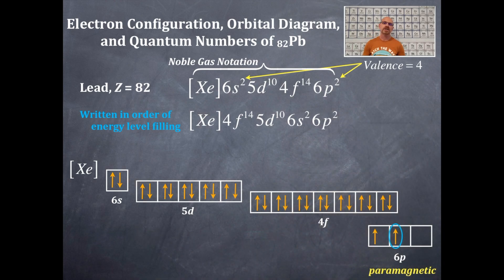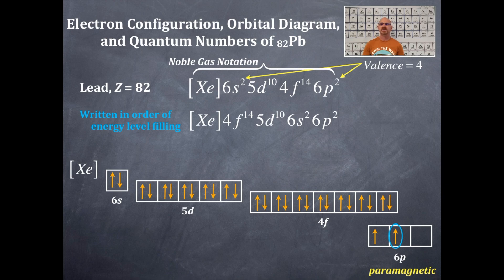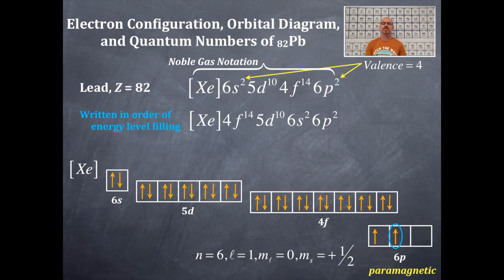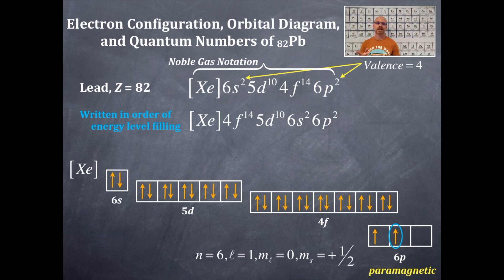I'm going to circle this electron. Pause the video and figure out the set of four quantum numbers — that's n, l, m-sub-l, and m-sub-s — for that electron, which happens to be the last electron in lead. You could use your periodic table and the location of lead to get that set of four quantum numbers. The answer is: n=6, l=1, m-sub-l=0, and m-sub-s= +1/2. It's in a 6p orbital, so n=6. P-type orbitals have l=1. It's in the middle box, which corresponds to m-sub-l=0. And the up arrow is going to heaven — that is positive one-half.